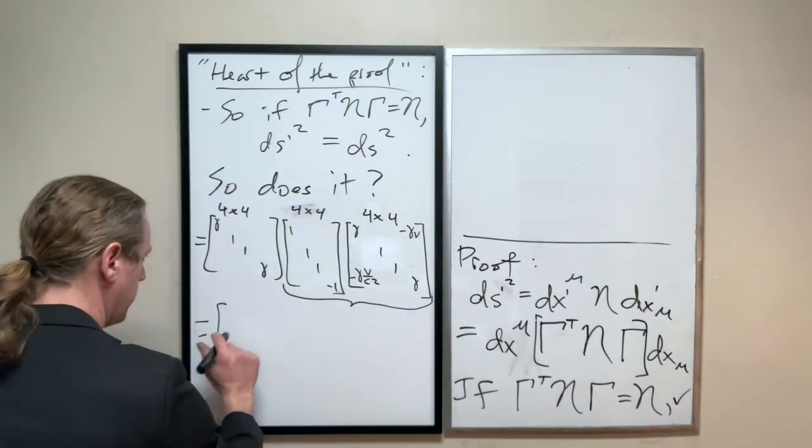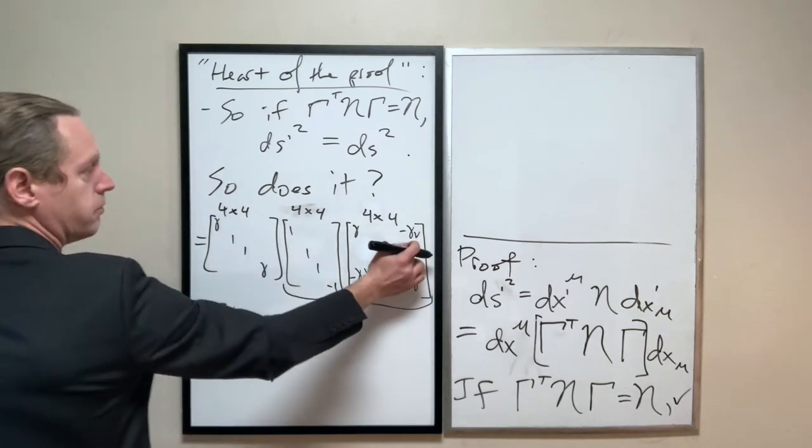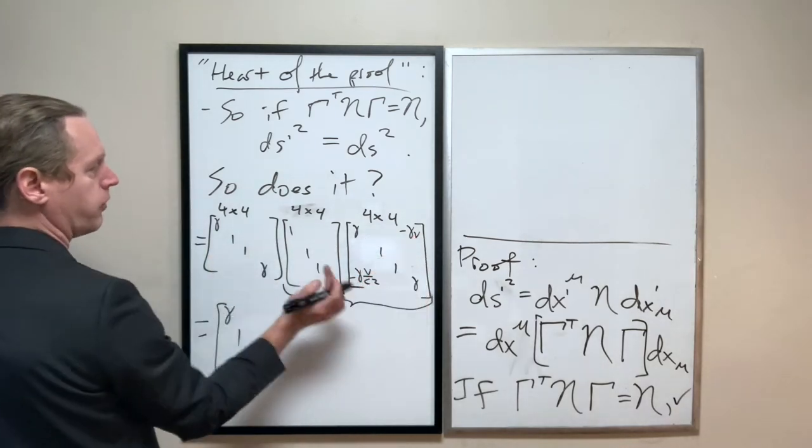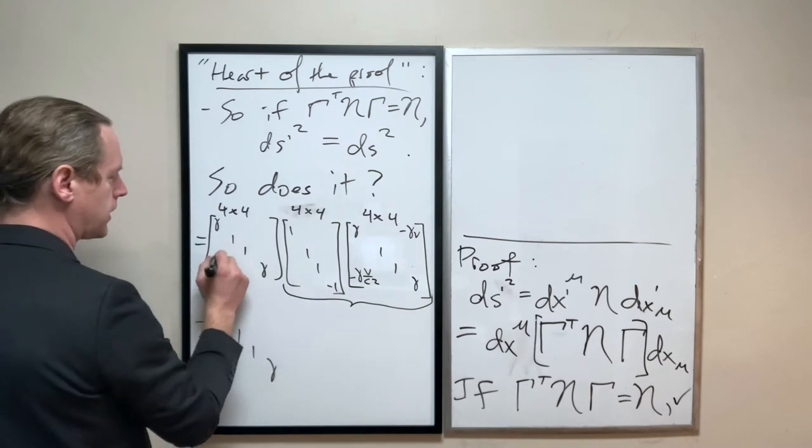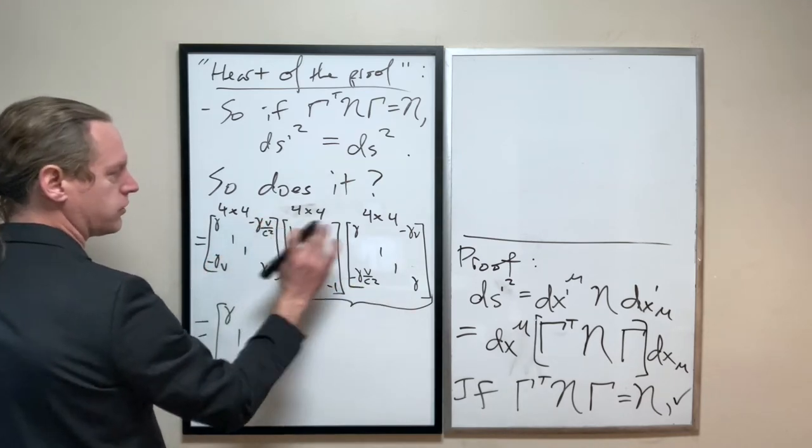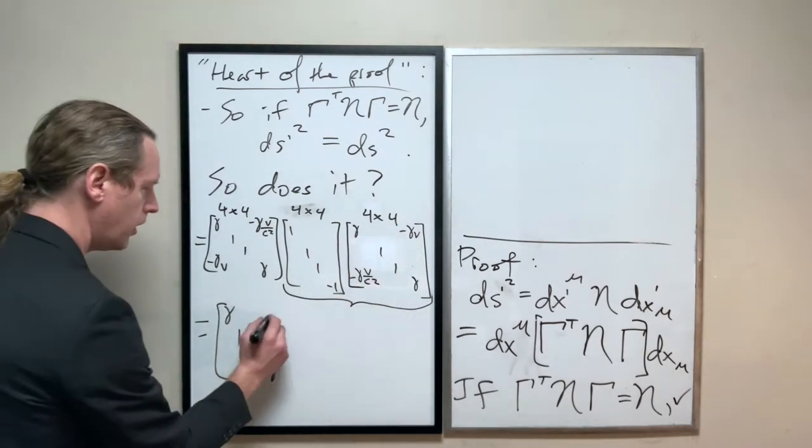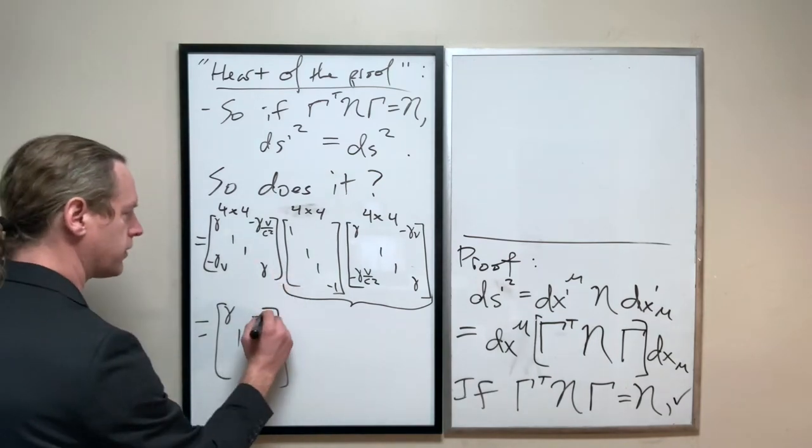Now, we'll keep that first one there, gamma 1 1 gamma. And we had, by the way, the transpose of that, which I didn't finish filling in, minus gamma v and minus gamma v over c squared. So, you literally just flip the two off diagonals. Okay, so we have that same matrix there.